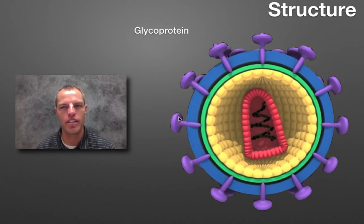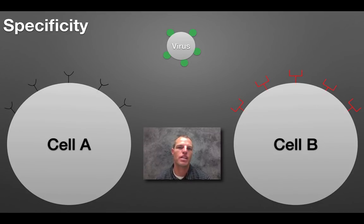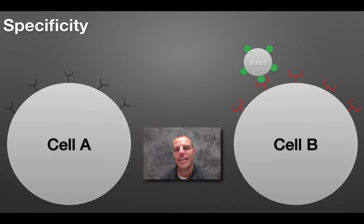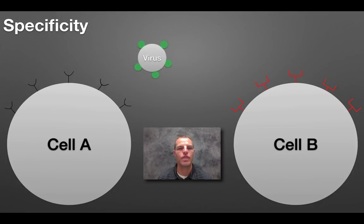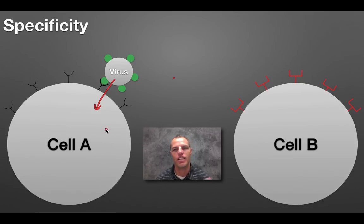Viruses can't just attack any type of cell. They actually have to have glycoproteins that match up to the receptor proteins of a particular cell. So this virus with those glycoproteins shown in green is not going to be able to attach to cell B, but it is going to be able to attach to cell A — because the glycoproteins match up to the receptor proteins of cell A. This virus will enter that cell, invade it, take over its processes, reproduce, and kill the cell in the process.